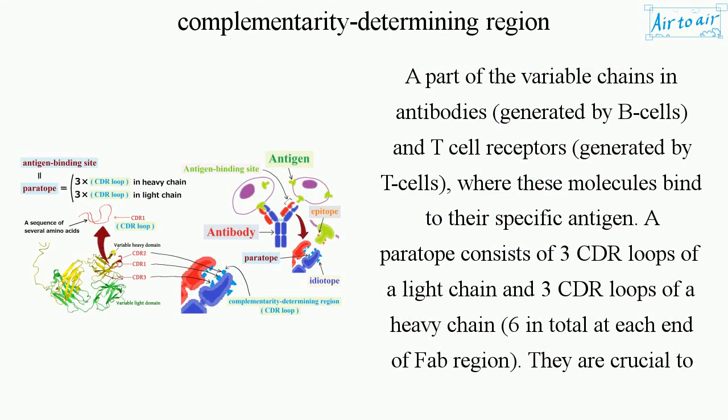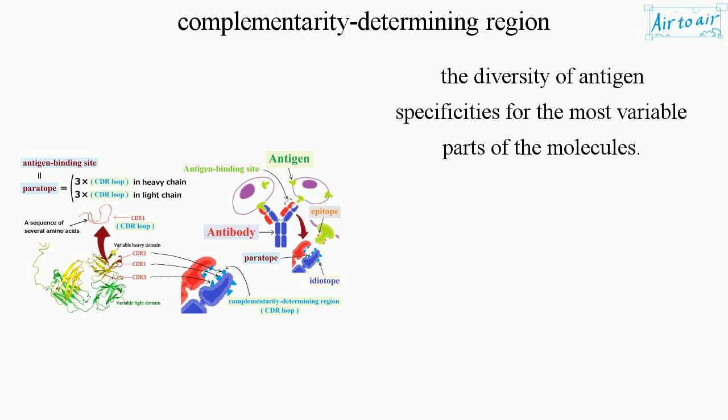An epitope consists of 3 CDR loops of a light chain and 3 CDR loops of a heavy chain, 6 in total at each end of the Fab region. They are crucial to the diversity of antigen specificities, as they are the most variable parts of the molecules.